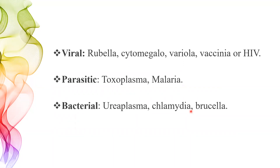Spirochetes cannot cross the placental barrier. So the viruses to remember are rubella, cytomegalovirus, variola virus, vaccinia virus, and HIV. Under parasites: toxoplasma and malaria. Under bacteria: ureaplasma, chlamydia, and brucella. These are the infections that lead to abortion.